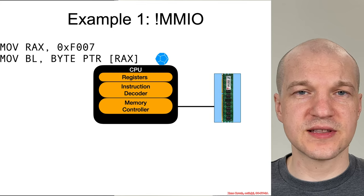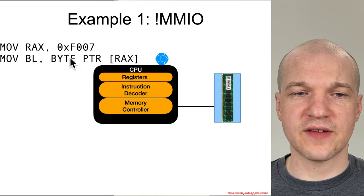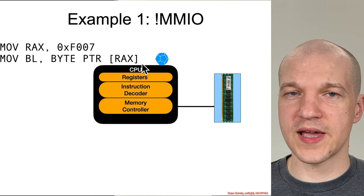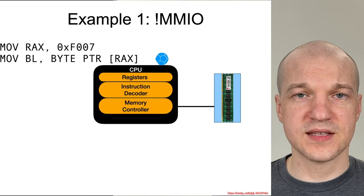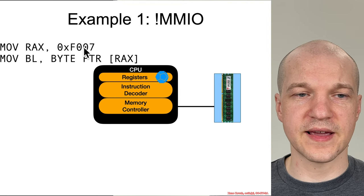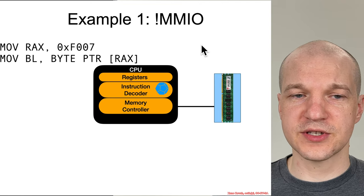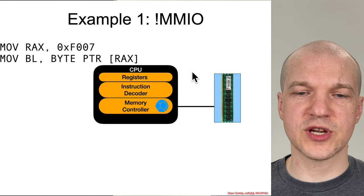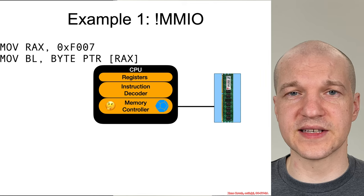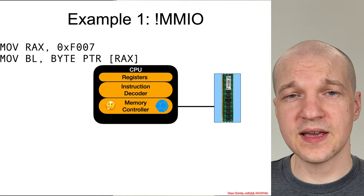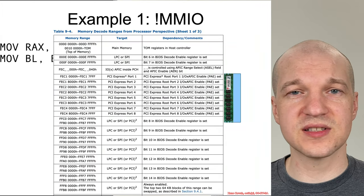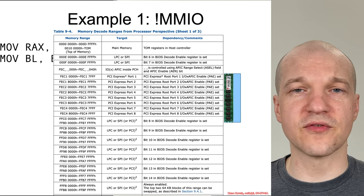In the first case, let's imagine we're talking about non-memory-mapped I/O. Here we have a couple of assembly instructions: taking the address 'foo', putting it into RAX, and then reading from RAM at that address into register BL. Following our little bouncing ball, it would make a stop at the registers to look up that RAX corresponds to address 'foo'. The instruction decoder pulls out that information and hands it to the memory controller, which sees there's some sort of memory access trying to access address 'foo'.